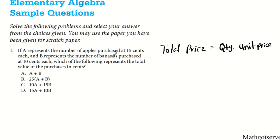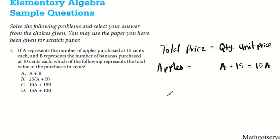We have two items here. For apples, the total for apples is going to be the quantity — how many apples were bought, A — multiplied by the unit price which is 15. This can be written as 15A. For bananas, the quantity is B multiplied by the unit price for bananas which is 10 cents each. So the total price for bananas is 10B.